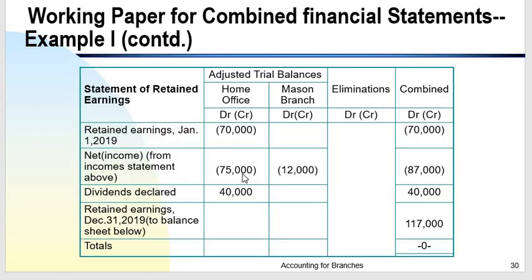For the combined statement of retained earnings: note that the branch has no retained earnings because its income is closed to the home office account. The home office has a beginning retained earnings balance of $70,000. Combined net income is $87,000. There are no eliminating entries here since there are no intercompany profits. Less dividends declared of $40,000, the ending retained earnings is $117,000 — that is $70,000 plus $87,000 minus $40,000.